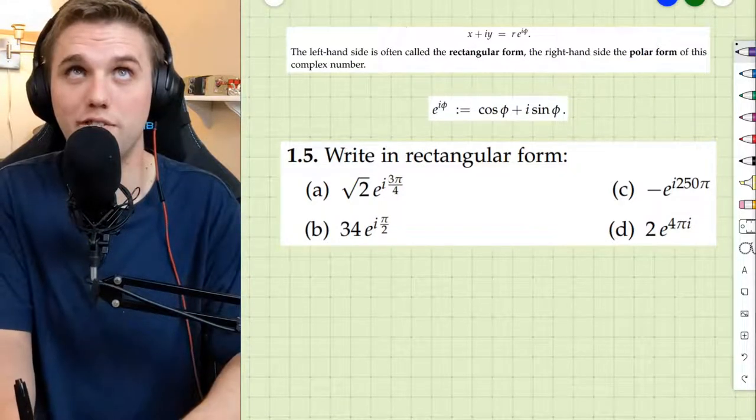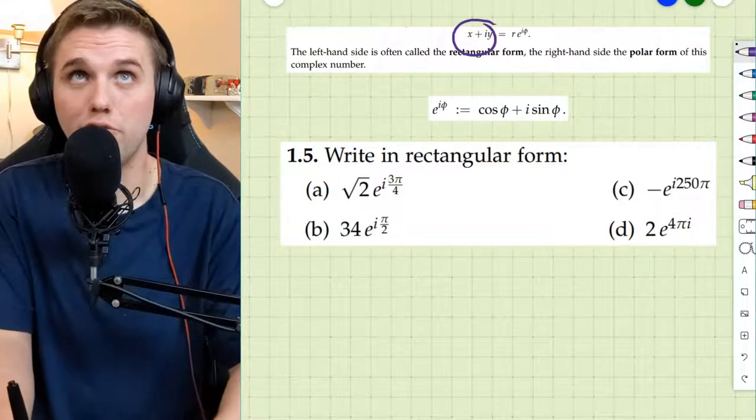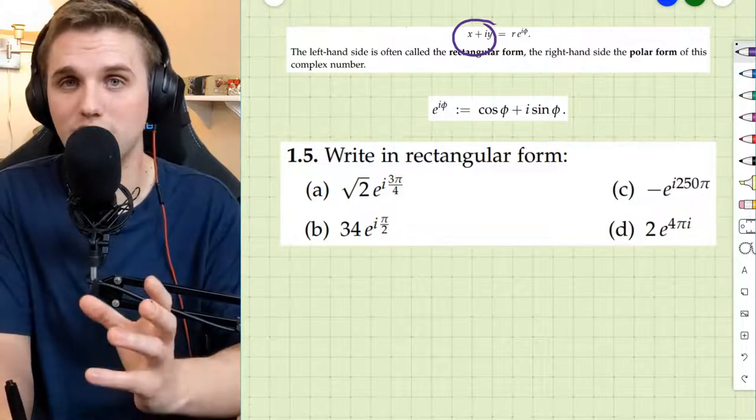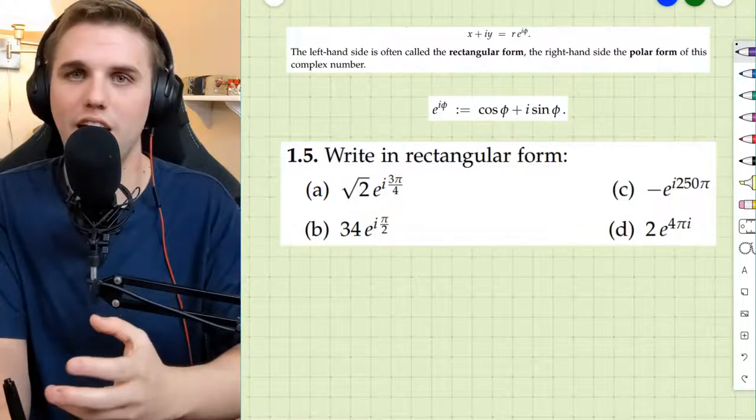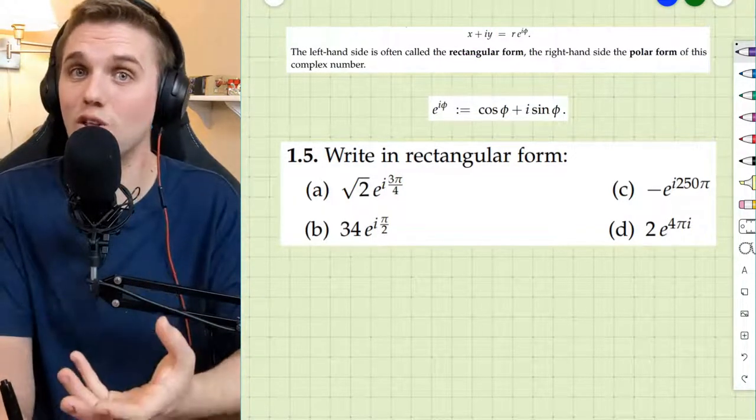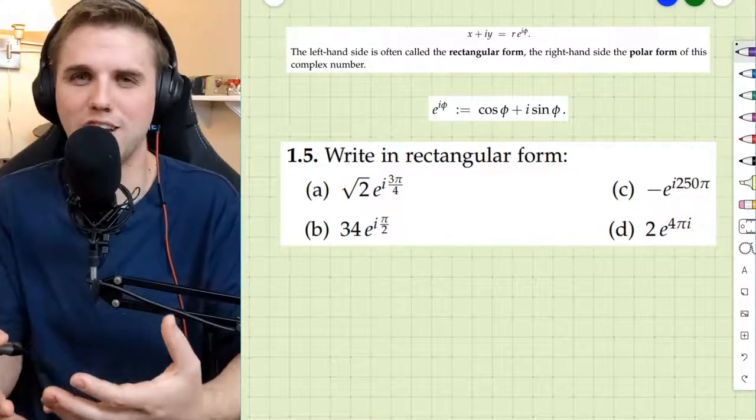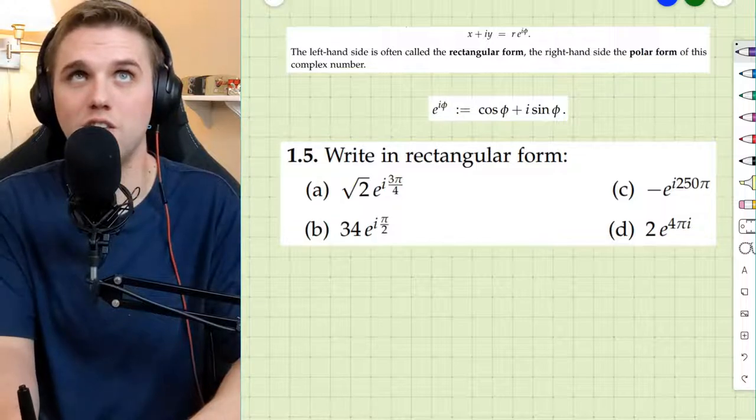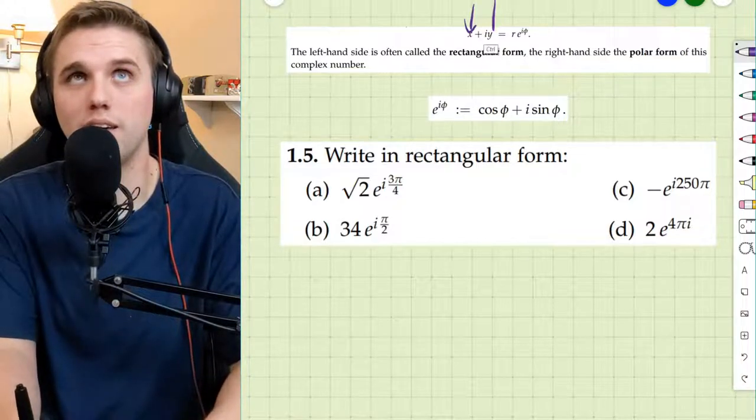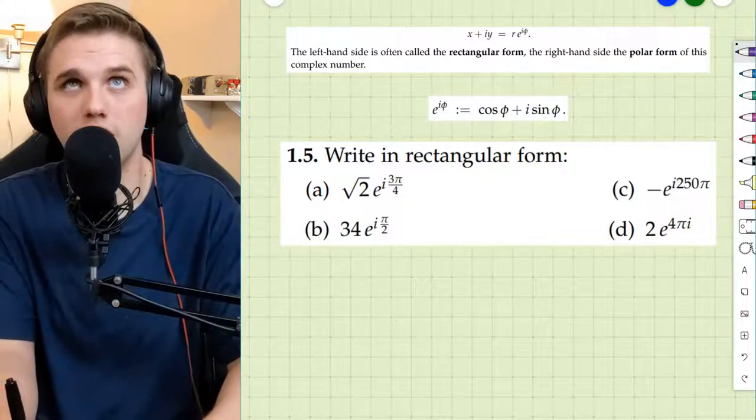Just to remind everyone, rectangular form is a representation of a complex number in a way that reflects rectangular coordinates. So the way you traditionally think about an xy plane, that's how you would interpret this x and this y in rectangular form.